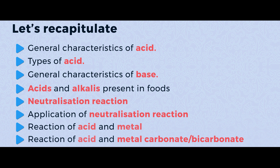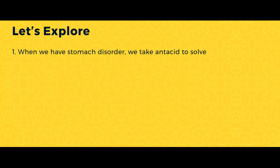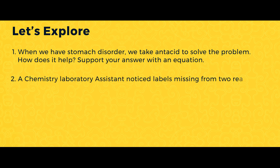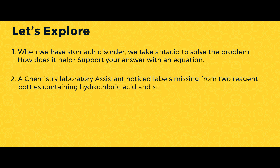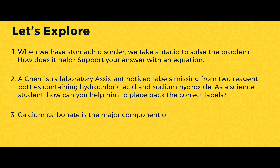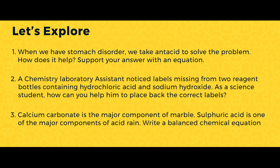Then lastly we looked at the reaction of acid with metal carbonate and metal bicarbonate. Let's explore our understanding with some questions. Question 1: When we have stomach disorder, we take antacid — how does it help? Support your answer with an equation. Question 2: A chemistry lab assistant found labels missing from bottles containing hydrochloric acid and sodium hydroxide — how can you identify them? Question 3: Calcium carbonate is the major component of marble, and sulfuric acid is a major component of acid rain — write a balanced chemical equation for the corrosion of a marble statue by acid rain. I hope you had fun learning with me. Thank you and see you in the next lesson.